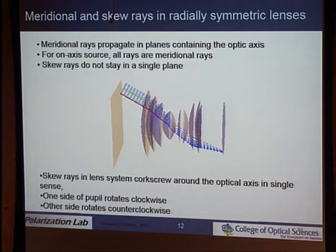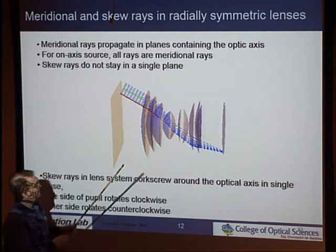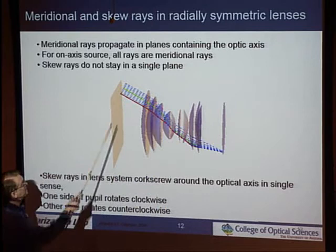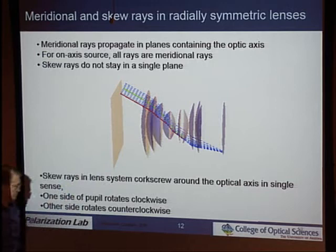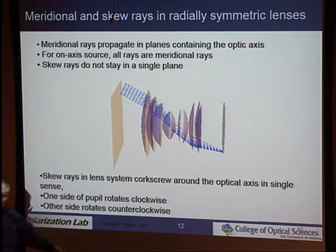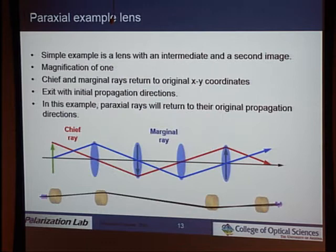The prediction is based on the behavior of skew rays. Here I show a lens with a fan of rays: the green ray is a meridional ray in the plane containing the optical axis, moving only up and down. The red ray is a skew ray — skew rays corkscrew around the optical axis in a single sense. When rays enter one side of the pupil they go around the axis clockwise; the other side counterclockwise. In the meridional plane there is no helicity.